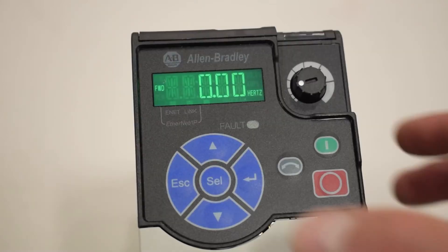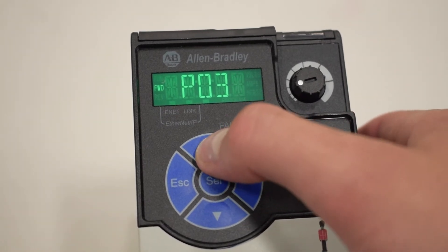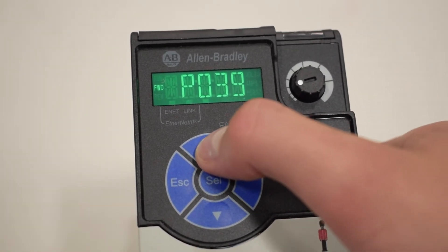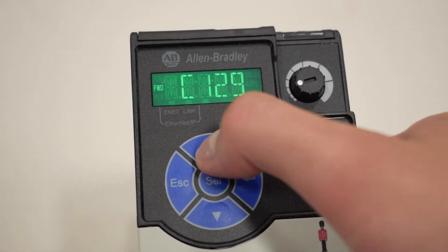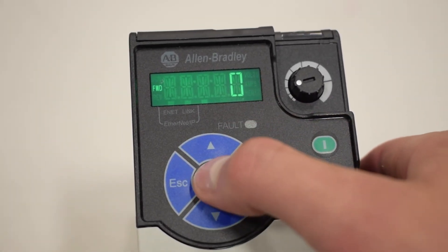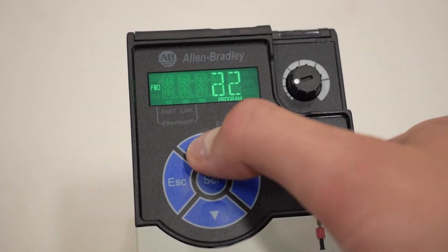Press the select button on the keypad to access the VFD parameter menu. The select key will confirm the flashing parameter digit value selected. Use the up, down, and select buttons on the keypad to navigate to the C129 through C132 VFD parameters to set the IP address.